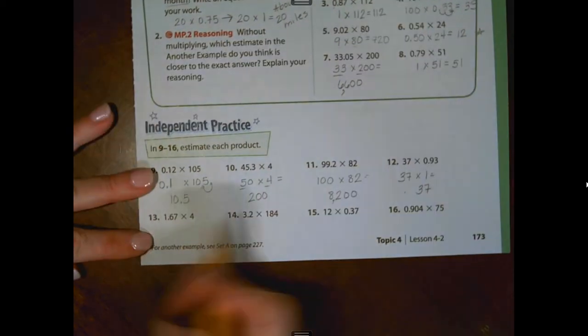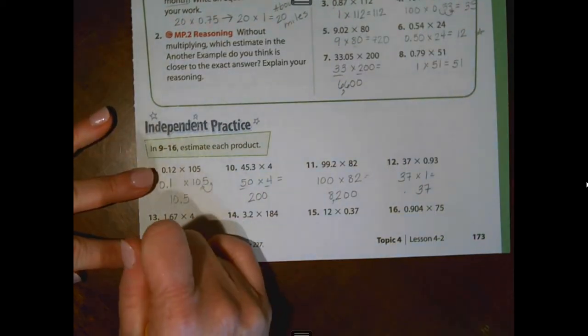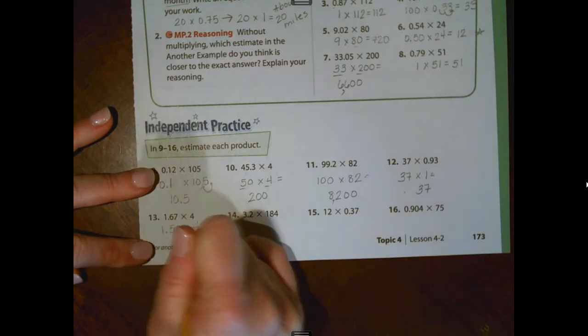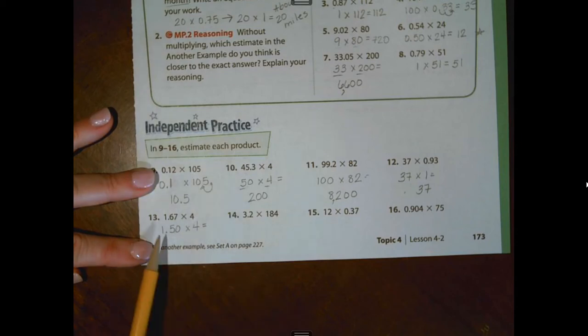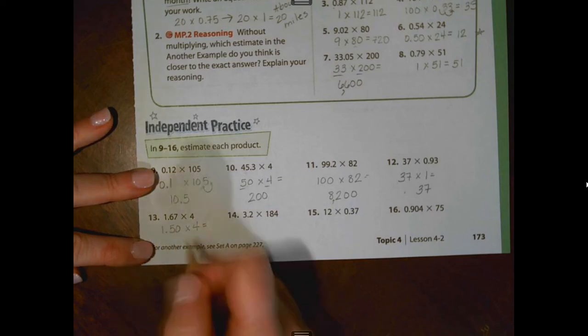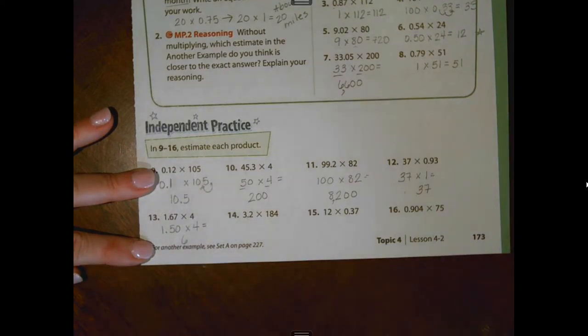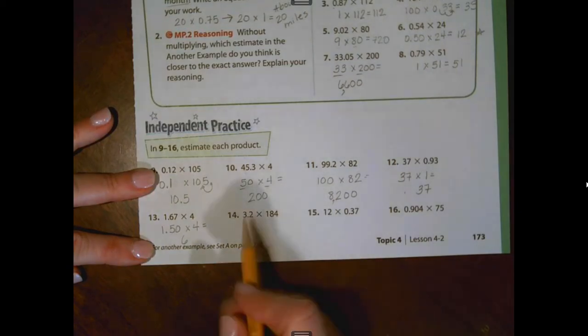Number 13, I am going to use some compatible numbers. I'm going to use 1.5 or 1.50 four times. And let me tell you, I'm thinking of this as money. I know that $1.50 four times is going to give me $6. So I know 1.5 or 1.50 four times will give me six. 1.5 and 1.5 give me three. And then another 1.5 and 1.5 give me three. So that's a total of six, just doing some mental math.